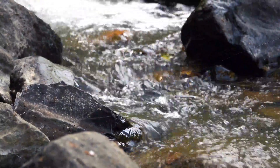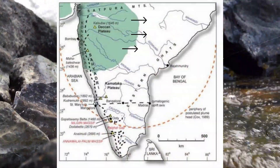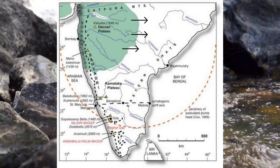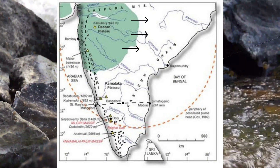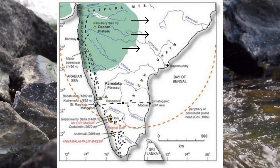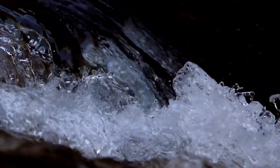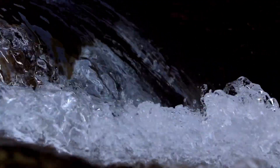Let's check out why. The Deccan Plateau is eastward sloping, meaning the western coast is elevated compared to the eastern coast. Because of this higher gradient, the rivers cannot collect a large amount of silt and flow at a very high speed compared to the east-flowing rivers.